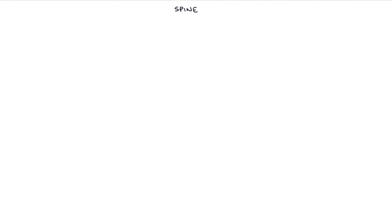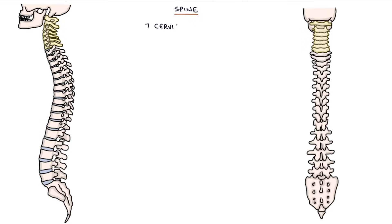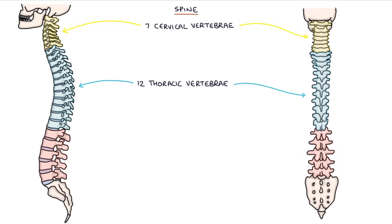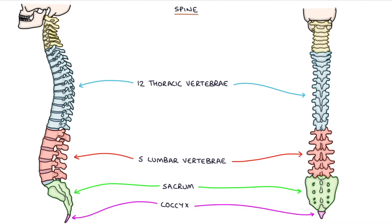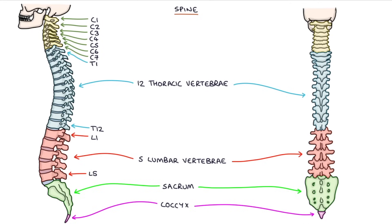Next let's look at the spine. The spine is made up of seven cervical vertebrae in the neck, 12 thoracic vertebrae in the thorax, five lumbar vertebrae, the sacrum, and the coccyx. Vertebrae are numbered from the top down, so C1 connects to the base of the skull, followed by C2 through C7, which connects to the first thoracic vertebra T1. You then get T1 to T12, then L1 to L5, and then the sacrum. C1 and C2 have special names: C1 is called the atlas, and C2 is called the axis.